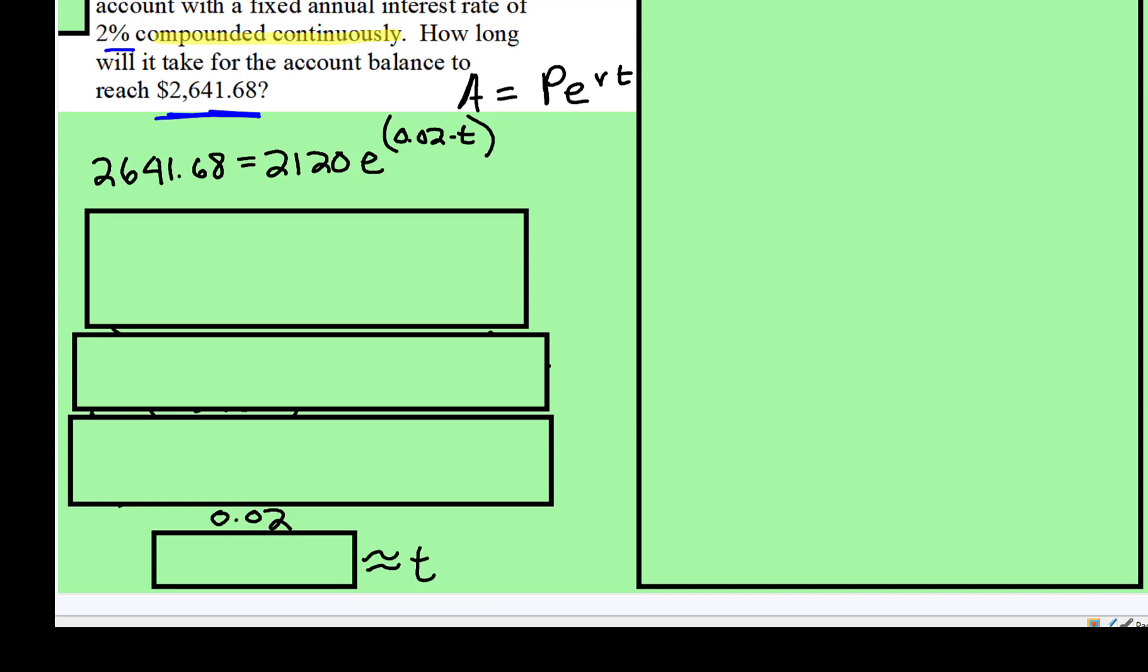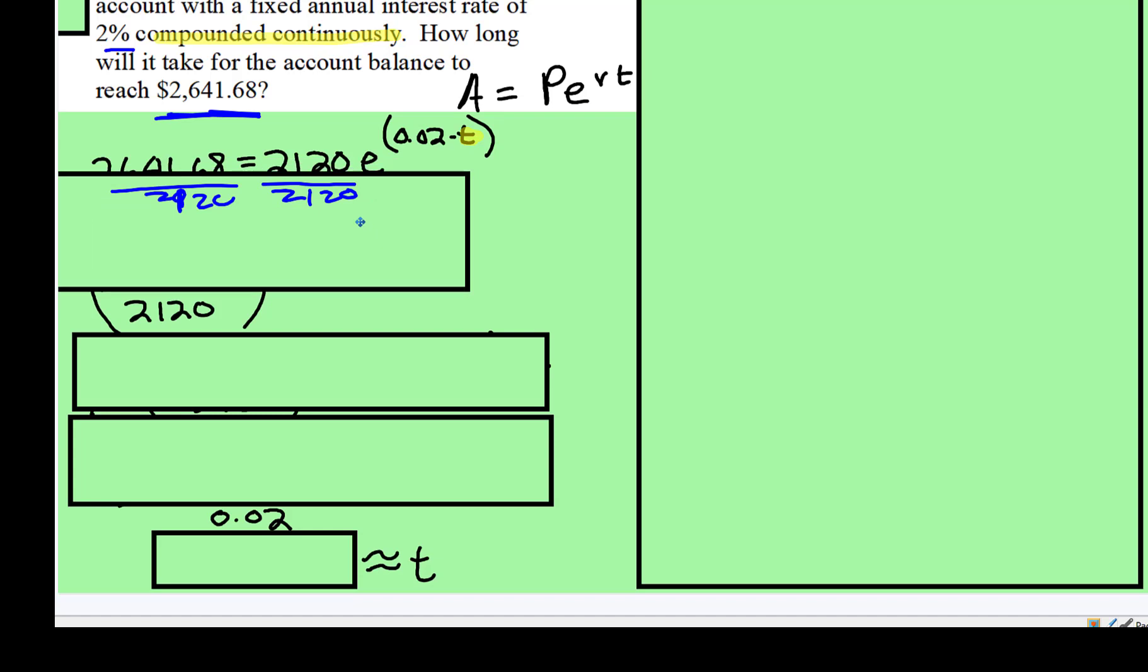Alright, so we need to get this T by itself. The first thing I notice is there's attached 2120 that we're going to divide both sides by. And you don't even have to simplify this expression if you don't want to. I recommend that you don't because you just don't have to for right now.